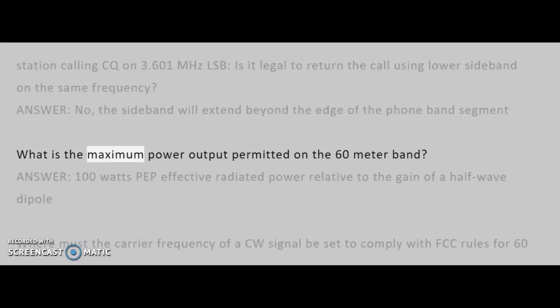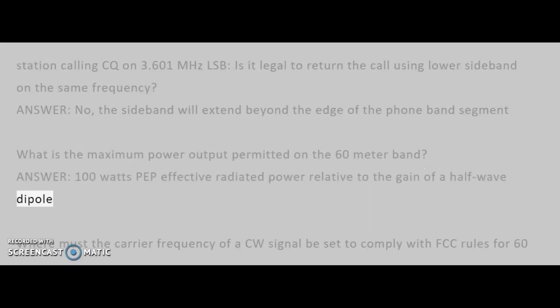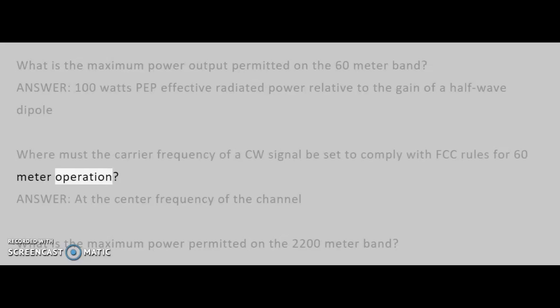What is the maximum power output permitted on the 60-meter band? Answer: 100 W PEP effective radiated power relative to the gain of a half-wave dipole. Where must the carrier frequency of a CW signal be set to comply with FCC rules for 60-meter operation? Answer: At the center frequency of the channel.